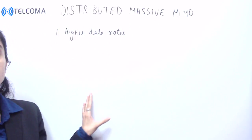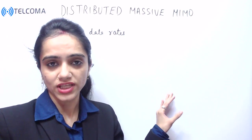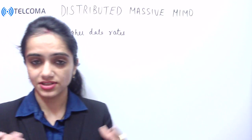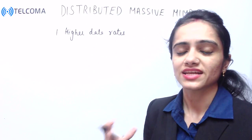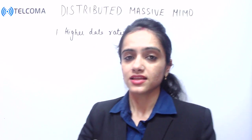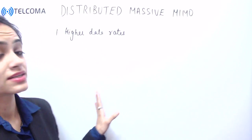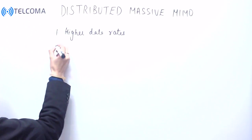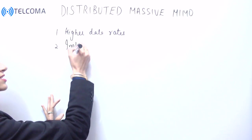That means if we require high data rates, we increase the total number of antennas at both ends, which increases the number of spatial streams that can be transmitted and increases the number of sub-terminals served. So massive MIMO serves high data rates.